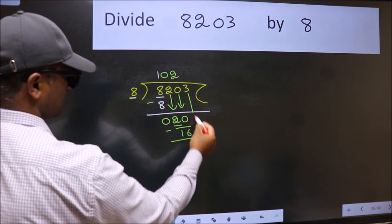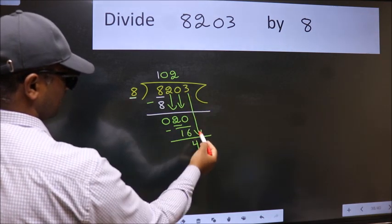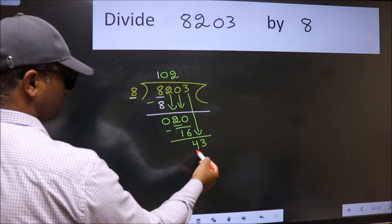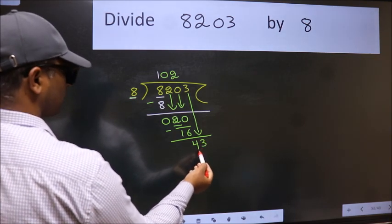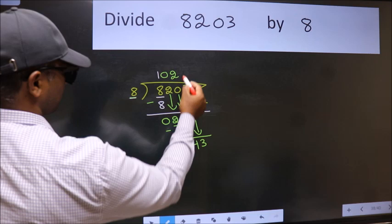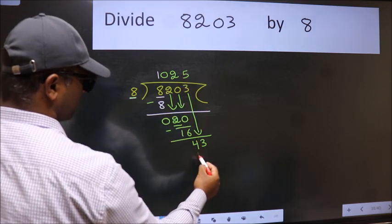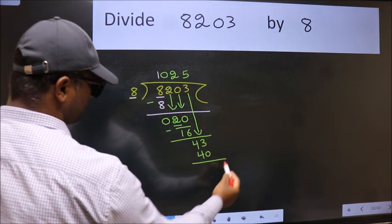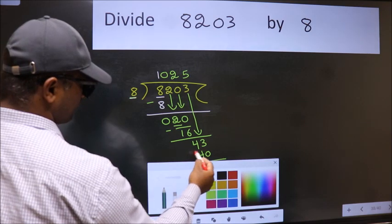After this, bring down the beside number. 3 down. So 43. A number close to 43 in the 8 table is 8, 5 is 40. Now we subtract. We get 3.